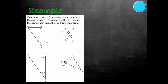Here we want to determine which of these triangles are similar by the angle-angle similarity postulate, and for those that are similar, write the similarity statement. We're just looking for angles that are the same. So here we have triangle ABC — it has a 90-degree angle and a 34-degree angle.